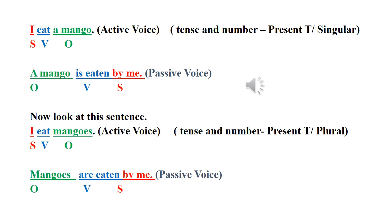I eat. When we find the tense, we have to look at the verb. There we see eat is the present tense. Then number. Number means here a mango. Singular or plural. After finding those things, we are going to turn this into passive voice.